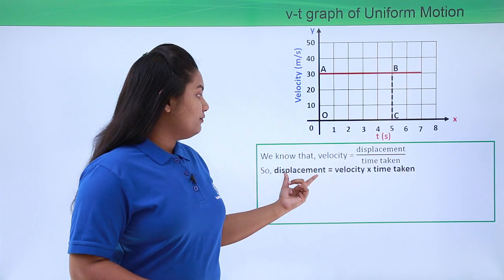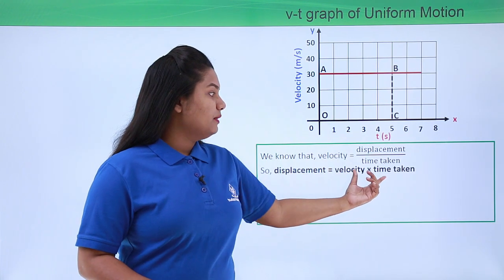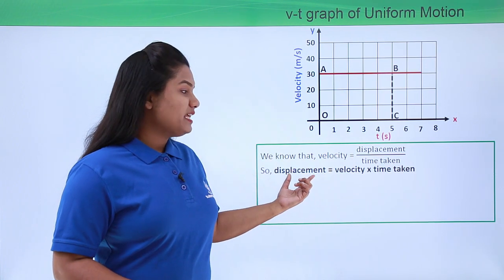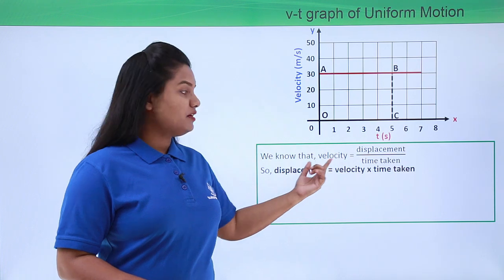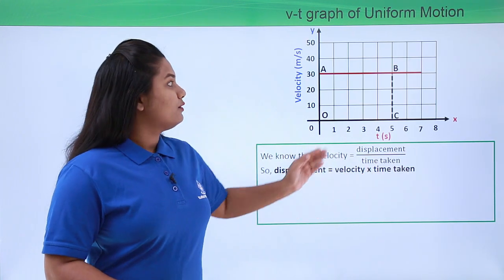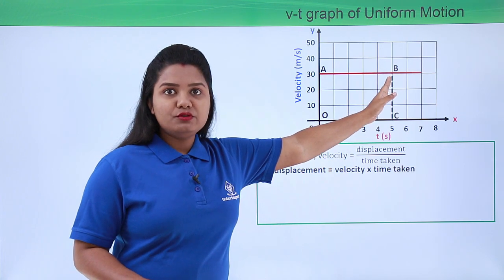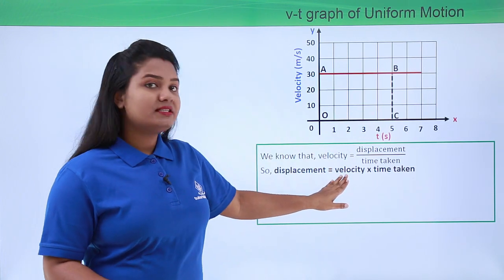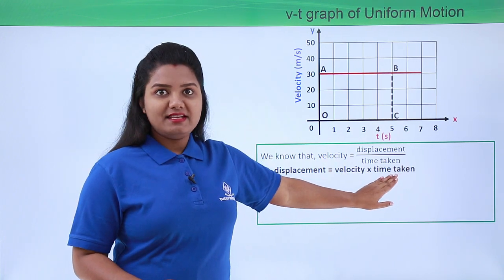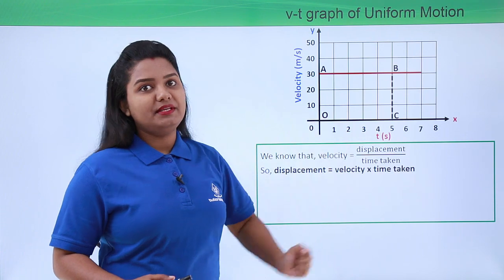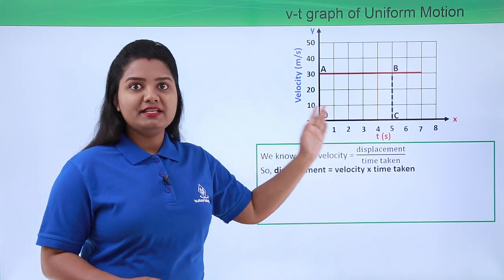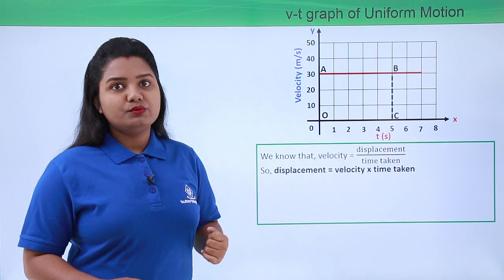So displacement will be equal to velocity multiplied by time taken. To find the displacement, we need to find the velocity and the time taken first. At point B, we need to know the value of velocity and the time taken by the body to reach point B — only then can we find the displacement.